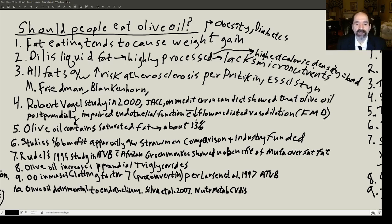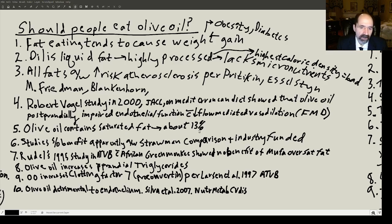Olive oil also contains more than just oleic acid — it also contains saturated fat in the ballpark of about 13%. Some studies suggesting a benefit for olive oil are industry-funded, comparing it to a really lousy diet to make olive oil look good. Whenever somebody studies one food item, that usually means industry is paying for it trying to make their food look good.